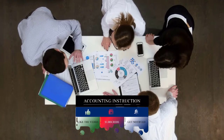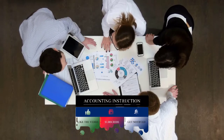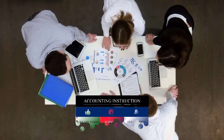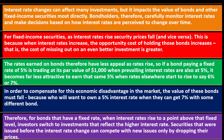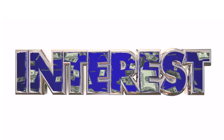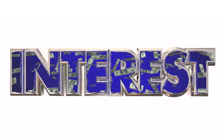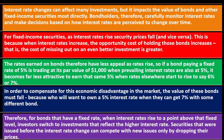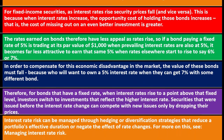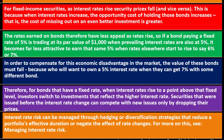The price of bonds will go down to compensate for the fact that the rate of return received is less than the market rate. For bonds with a fixed rate, when interest rates rise above that fixed level, investors switch to investments reflecting a higher interest rate. Securities issued before the interest rate change can compete with new issues only by dropping their prices. Interest rate risk can be managed through hedging or diversification strategies that reduce a portfolio's effective duration or negate the effect of rate changes.